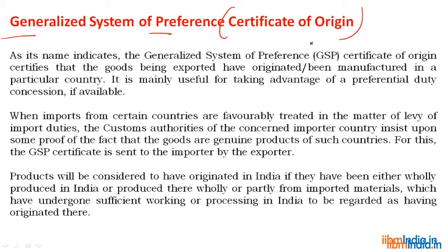Products will be considered to have originated in India if they have been either wholly produced in India, or produced wholly or partially from imported materials that have undergone sufficient working or processing in India to be regarded as having originated there. So even if raw materials were imported from across the globe and the goods were manufactured in India, the product will be considered as manufactured in India.